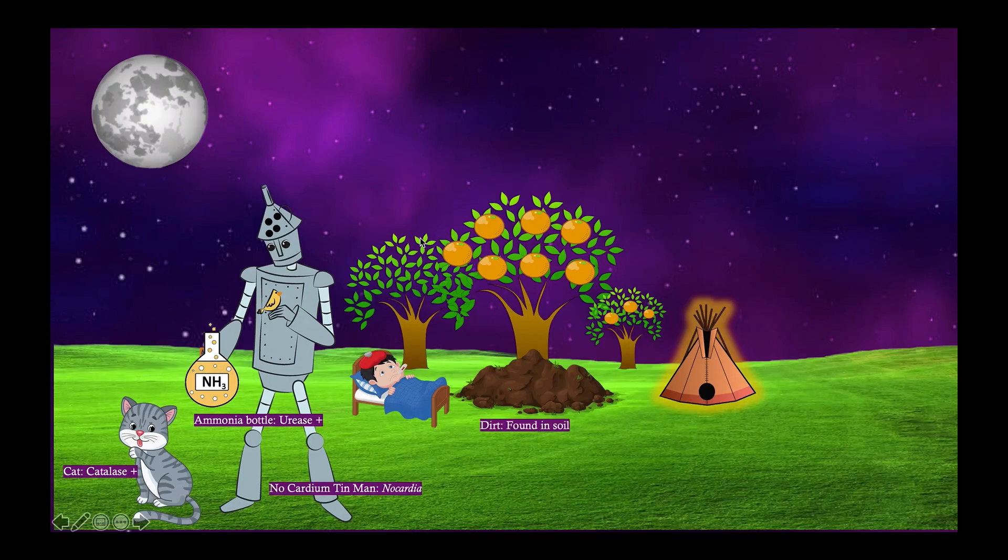Notice that we have some branching trees back here to help you remember that this is a branching filament and our purple sky because it's gram positive. Gram positive branching filament. And these trees are growing in of course dirt, to help you remember that Nocardia is found in the soil and can get into the air. And by getting into the air it can cause bronchopulmonary disease.